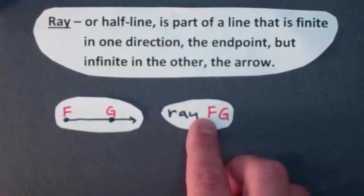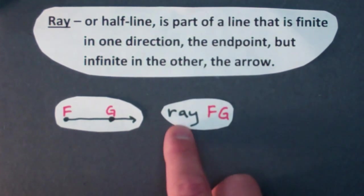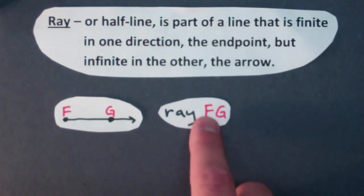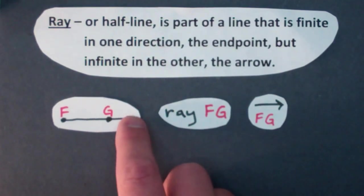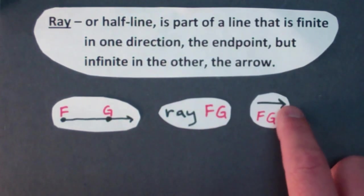The word that you would see for ray in the sentence was just the word ray. So this is ray FG and there's a symbol for ray. It's just a line with one arrow. There's one arrow in the illustration. There's one arrow for the symbol.